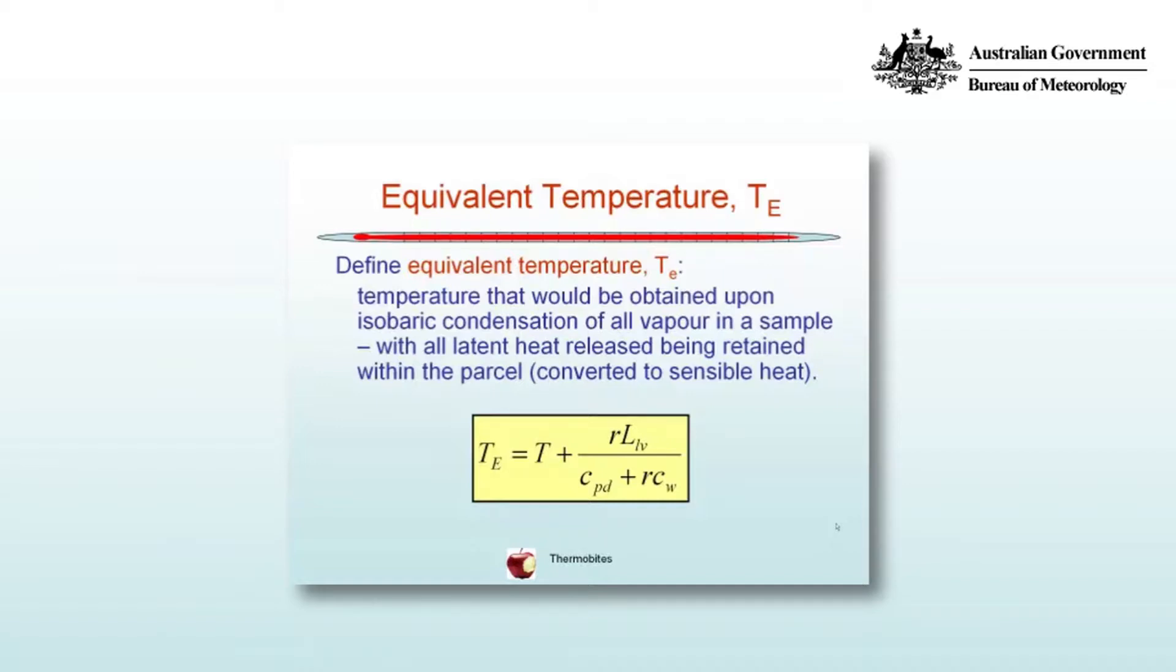The equation for that is shown in the box. Te is equal to T plus a term involving the mixing ratio, latent heat of vaporization, and the heat capacities of both dry air and water.